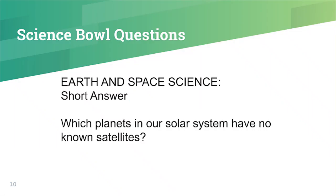Earth and space science, short answer: Which planets in our solar system have no known satellites? The answer is Mercury and Venus.